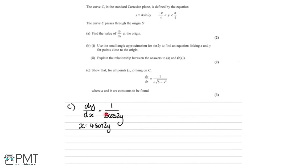From the previous part we know dy by dx equals 1 over 8 cos 2y, and x equals 4 sine 2y. We'll also use the identity sine squared x plus cos squared x equals 1. Replacing x with 2y gives sine squared 2y plus cos squared 2y equals 1. Our aim is to eliminate all the y's from the right-hand side by expressing cos 2y in terms of x.